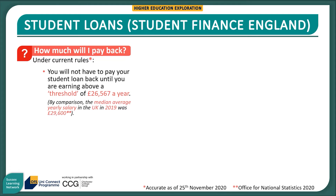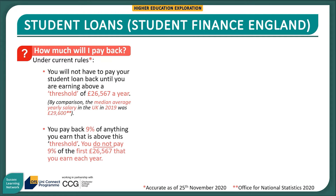First, you will not have to pay back your student loan until you are earning a certain amount each year. This threshold is to make sure you can afford to do so. At the moment, this is £26,567 or over a year. By comparison, the median average yearly salary in the UK in 2019 was £29,600 — just over this. Second, you pay back 9% of anything you earn that is above the threshold. You do not pay 9% of the first £26,567 that you earn each year — this amount is ring-fenced off and is not touched.